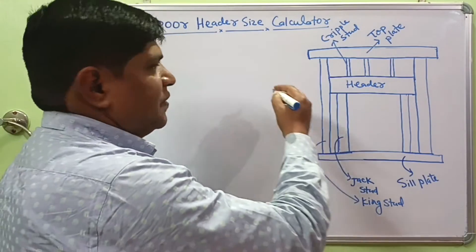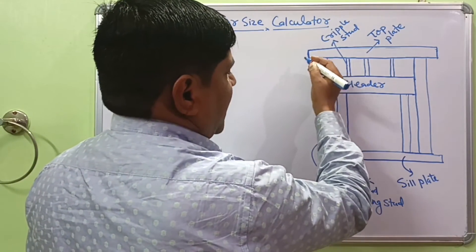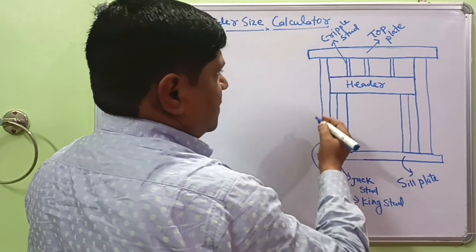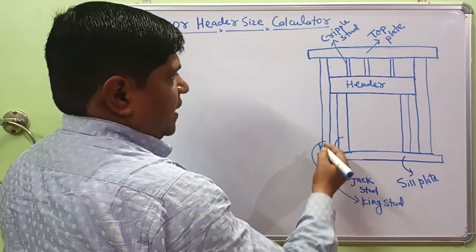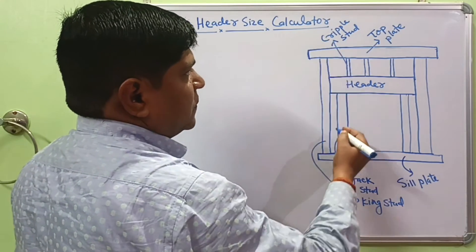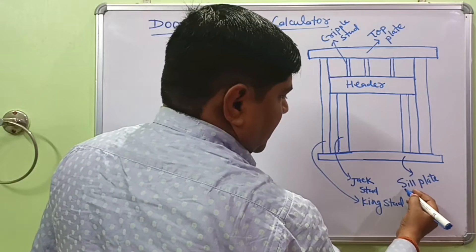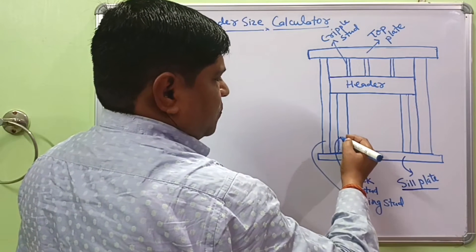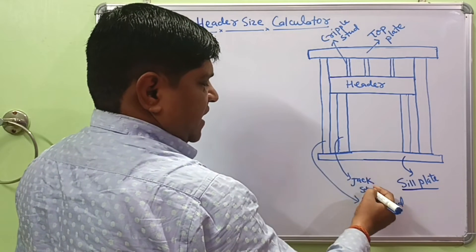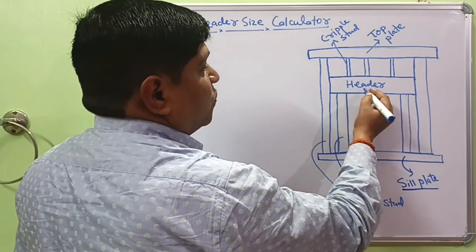You know that in different cold region countries like European countries and United States, most houses are made of wooden frame structure. Here is the diagram, as you see this is bottom plate known as sill plate and from the sill plate there are two studs, this one is jack stud and this one is king stud which provide the support to the header.